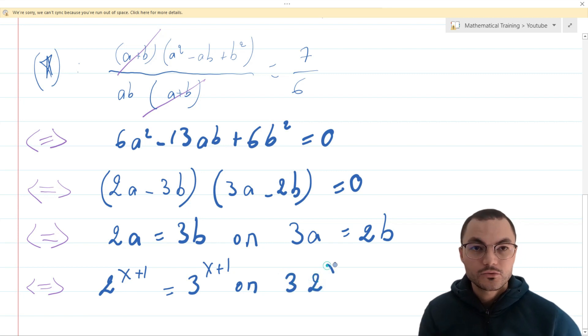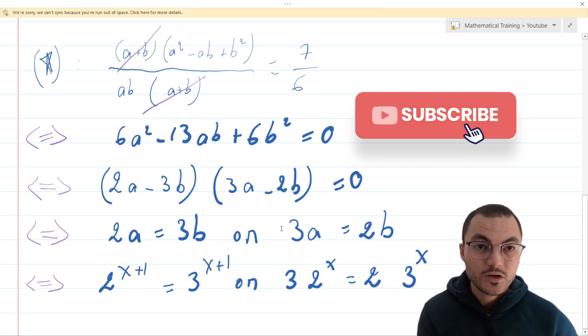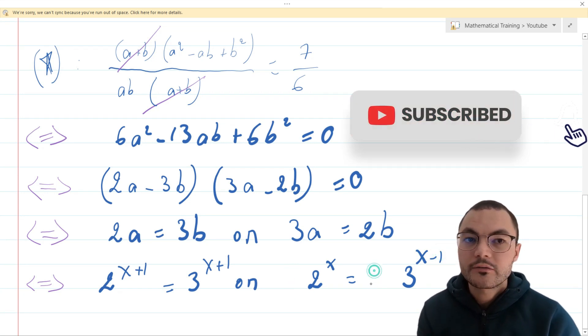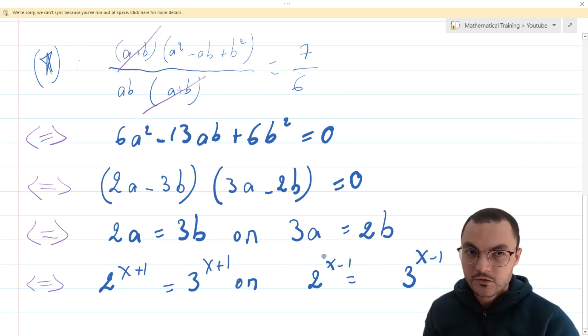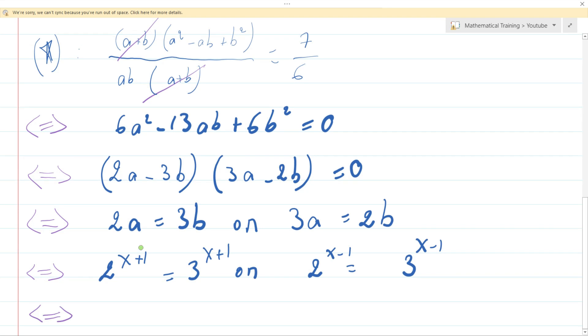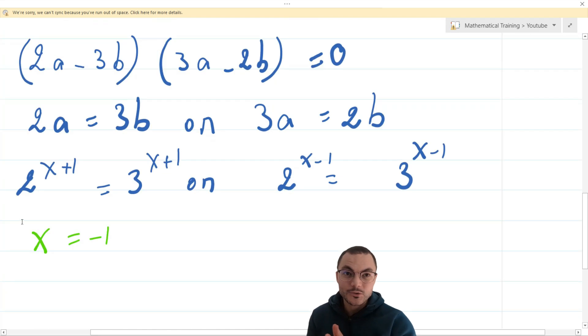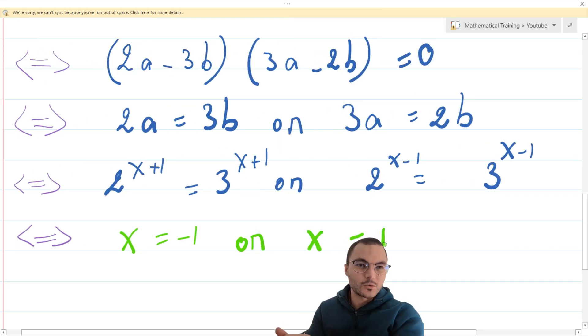On the other side, 2 to the power of x minus 1 equals 3 to the power of x minus 1 which is only true if x minus 1 is equal to 0. So x is equal to minus 1 or x is equal to 1.